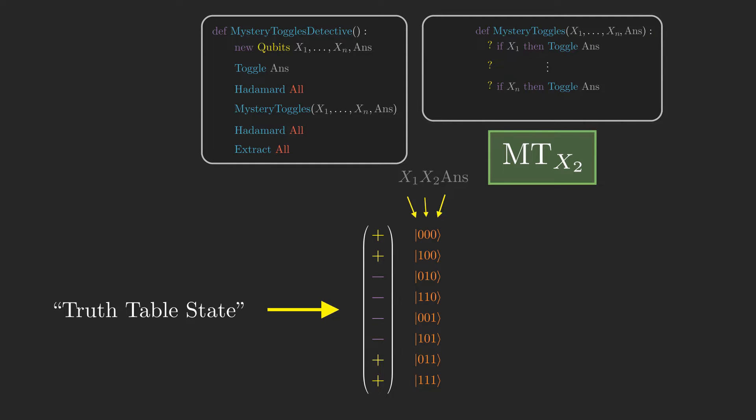The state vector now encodes a sort of truth table for mystery toggles. In particular, positive amplitudes correspond to mystery toggles outputting 0, and negative amplitudes correspond to mystery toggles outputting 1. Taking the basis state 010 as an example, the fact that it has a negative amplitude indicates that if x1 is 0 and x2 is 1 and answer is 0, answer will be 1 after mystery toggles is called. And for this other state 100, its positive amplitude tells us that if x1 is 1, x2 is 0, and answer is 0, then answer will be 0 after mystery toggles is called.